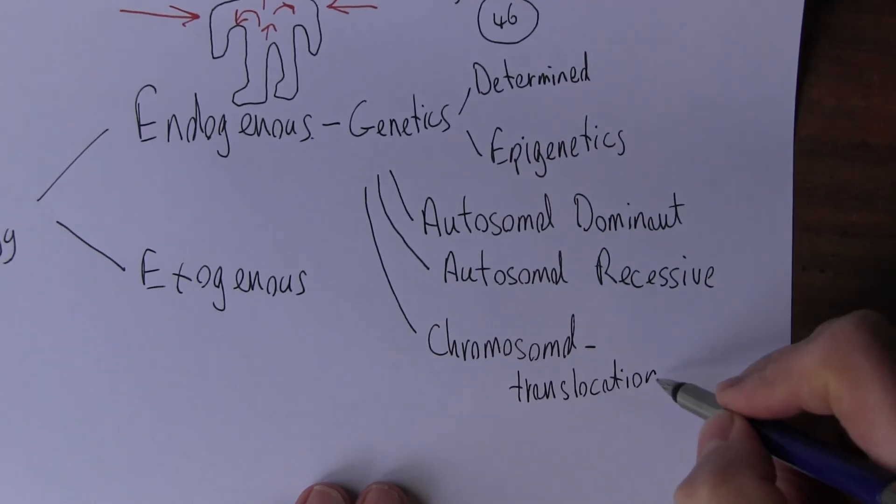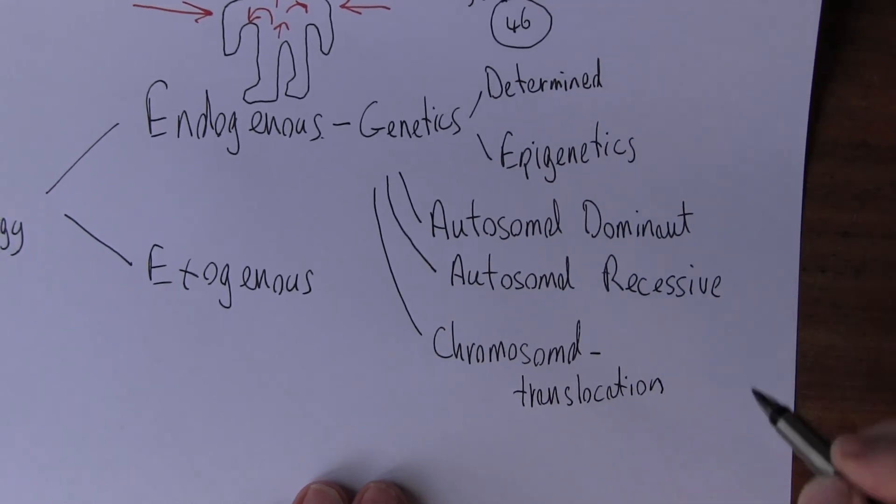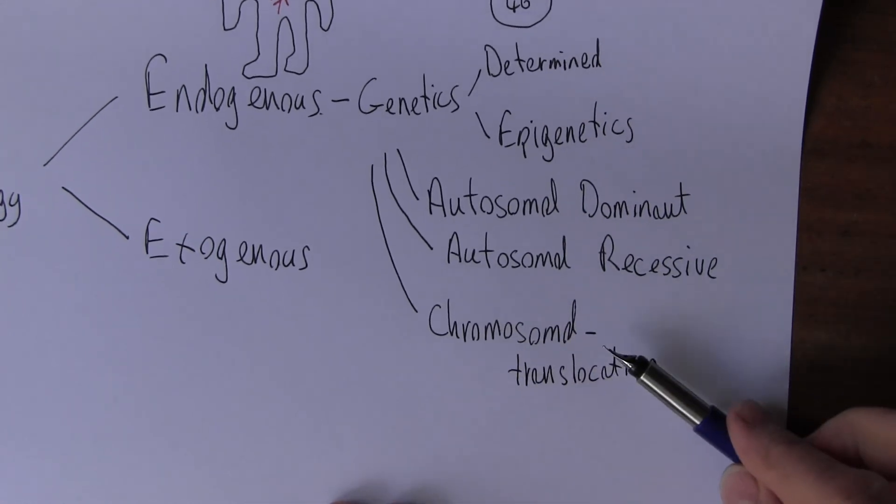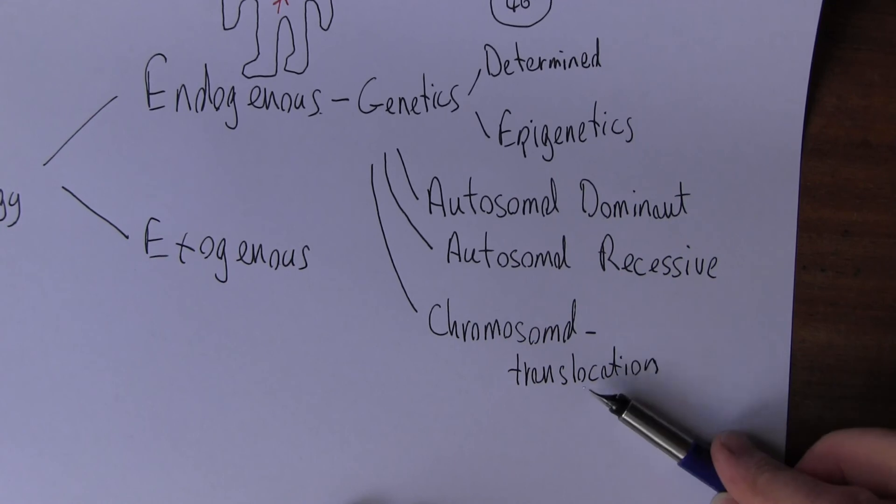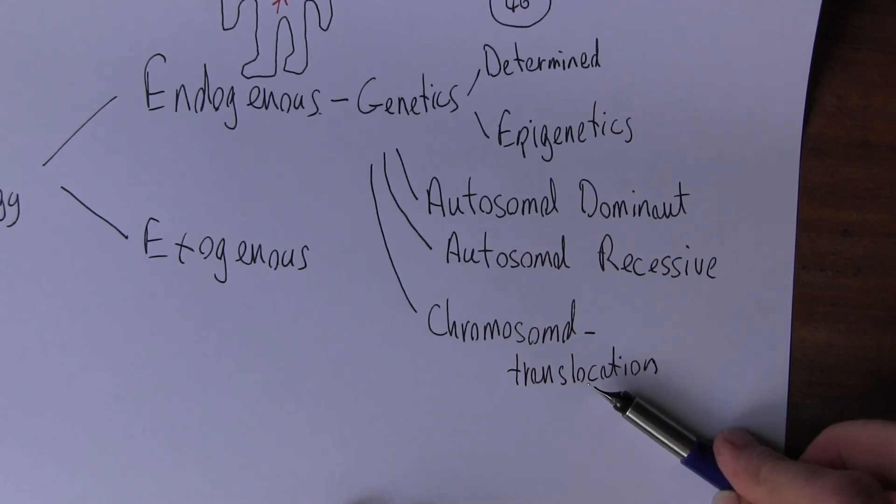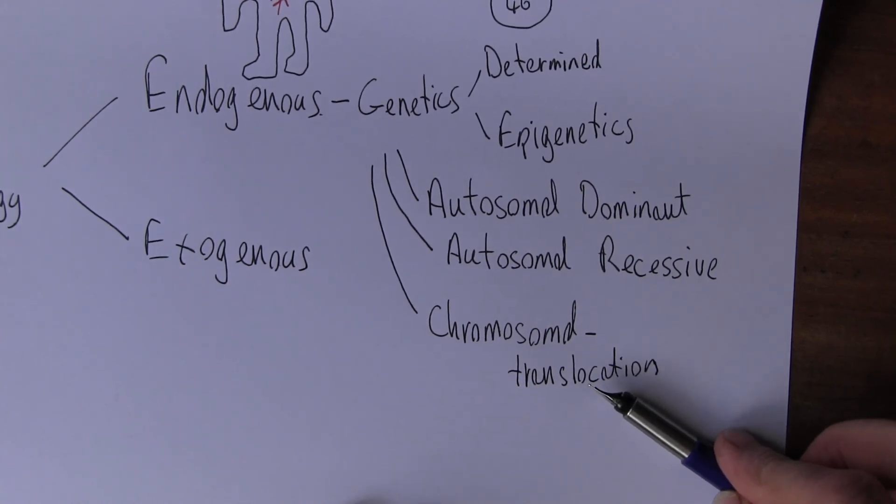Where part of a chromosome tags onto another chromosome. This sometimes happens in Down syndrome where it's not actually a trisomy 21 syndrome, they just have an extra bit of chromosome, and that causes the characteristic features of Down syndrome.